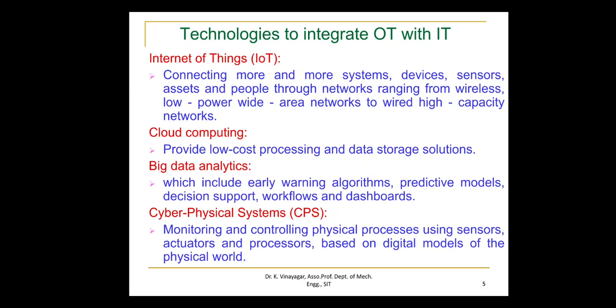Cyber-Physical Systems: monitoring and controlling physical processes using sensors, actuators, and processors based on digital models of the physical world. With the help of intelligent control systems, embedded software has communication capabilities. Cyber-Physical Systems also have additional capabilities in manufacturing such as track and trace and remote control. They enable smart factories, smart logistics, and other smart applications in energy, oil and gas, and utilities.